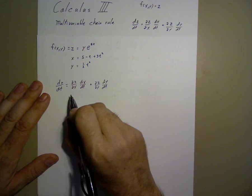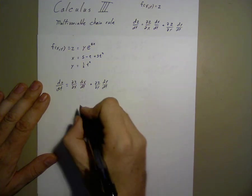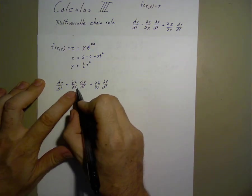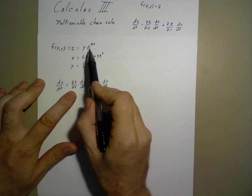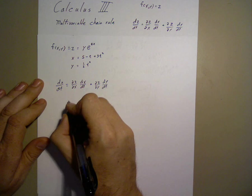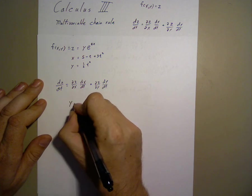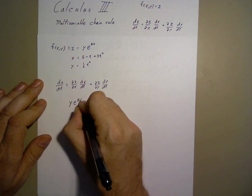In this case, in our particular example right here, we'll take the partial derivative of z with respect to x. That is, we hold all other things constant.